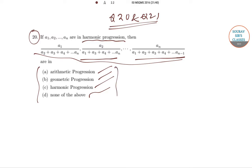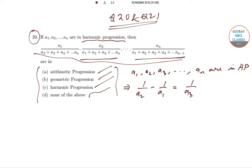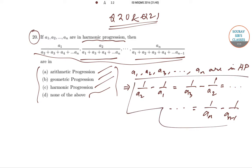Let's begin. The first condition given is that a₁, a₂, a₃, up till aₙ are in harmonic progression. This implies that 1/a₂ − 1/a₁ equals 1/a₃ − 1/a₂, and this goes on up till 1/aₙ − 1/aₙ₋₁. This is the condition we have been given.